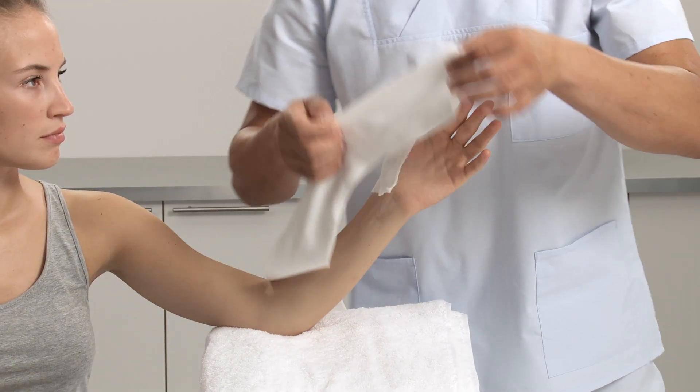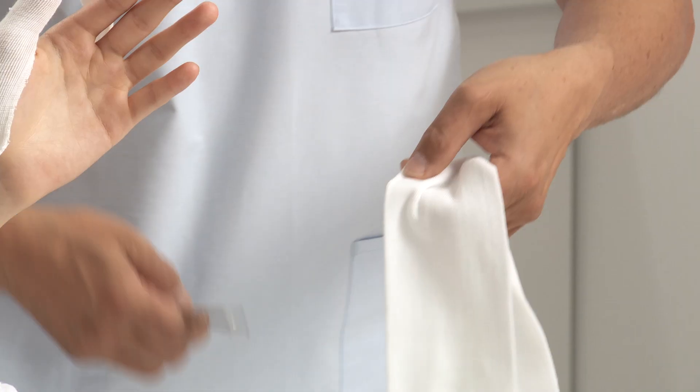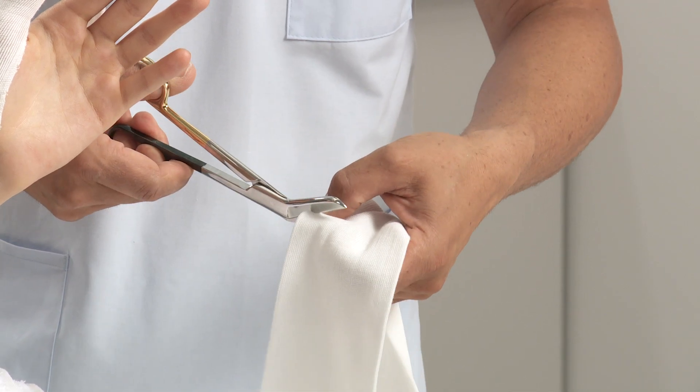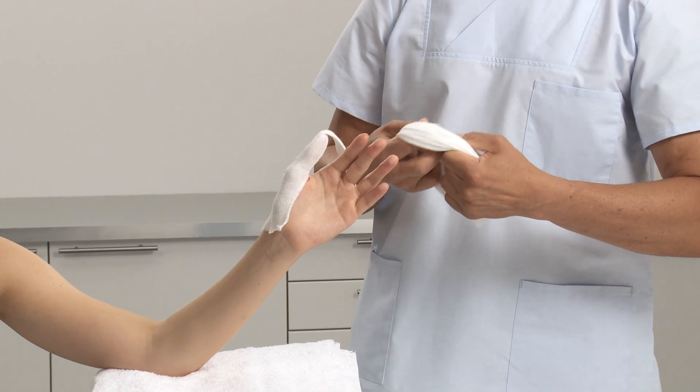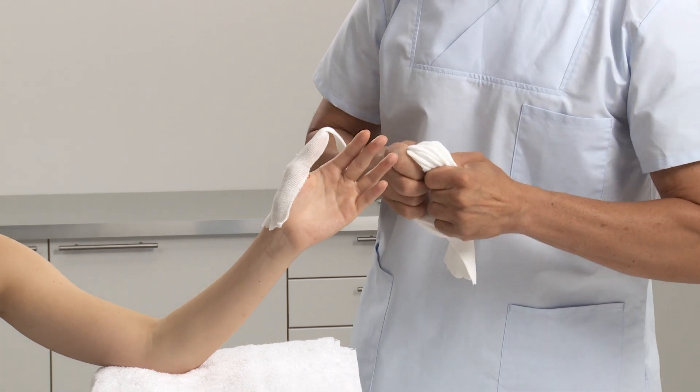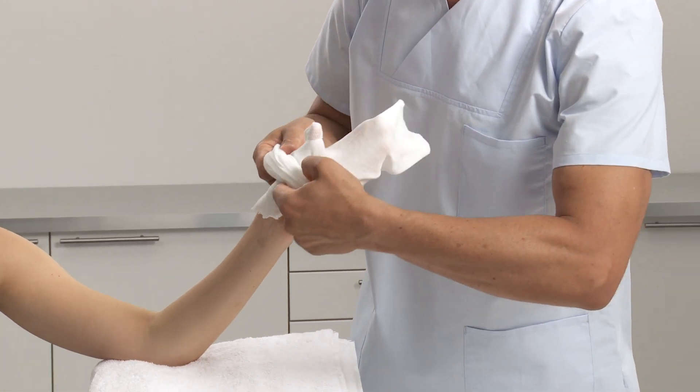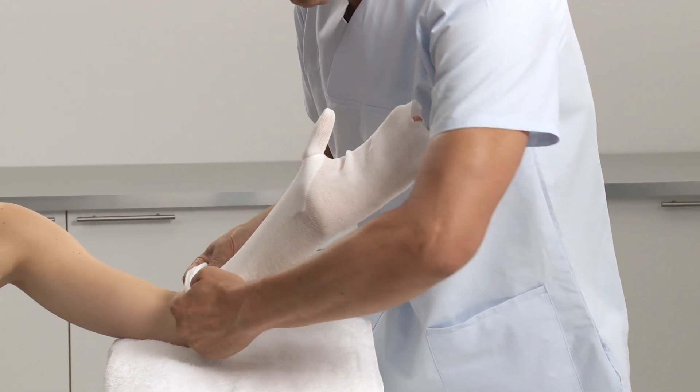Cut a hole into the arm stockinette at thumb height and roll it up before applying onto the limb to prevent sliding pressure during application. Roll off over the arm and smooth down, ensuring the thumb hole does not constrict the patient.